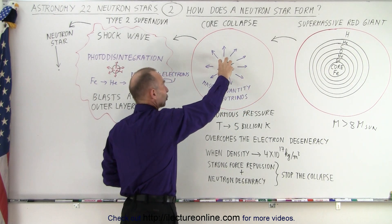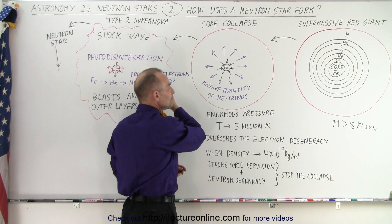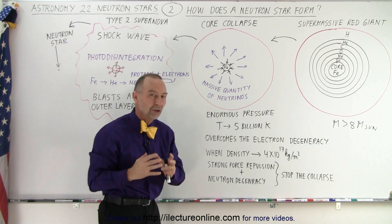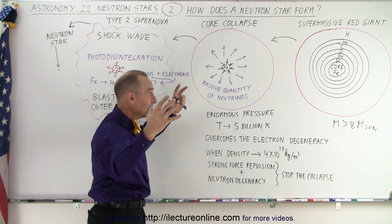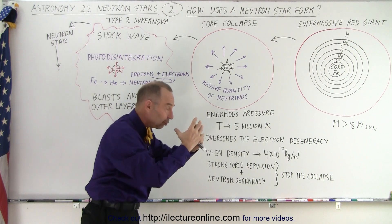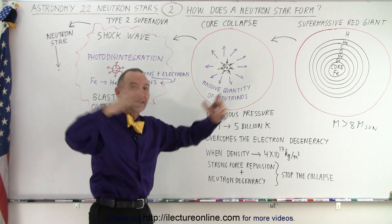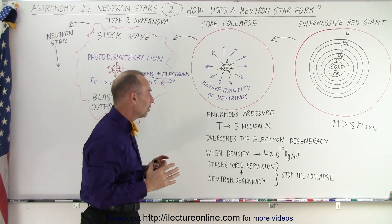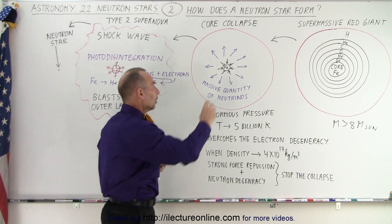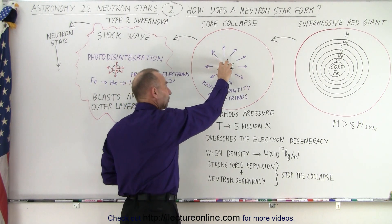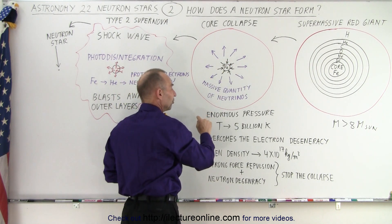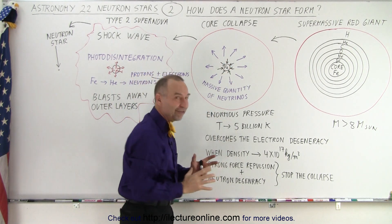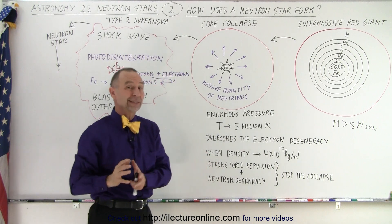Once that happens, we have what we call the core collapse, which produces massive quantities of neutrinos. The vast majority of the energy from the collapse of the core is sent out into space with a huge blast of neutrinos. The collapse results in enormous pressure and temperatures reaching 5 billion Kelvin.